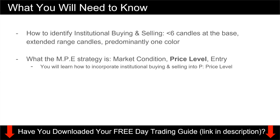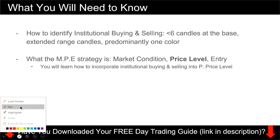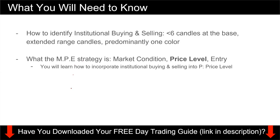I'll go into the charts to show you step-by-step. But before that, a very brief introduction to how to find institutional buying and selling. You are looking for three characteristics. Number one: there are less than six candles at the base. Number two: you want to see extended range candles where the candles close at the top or the bottom of the range.